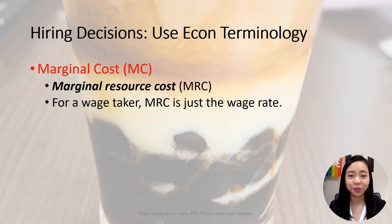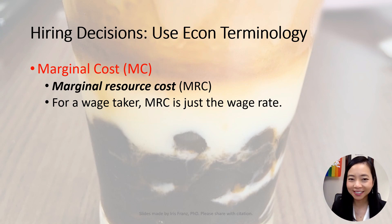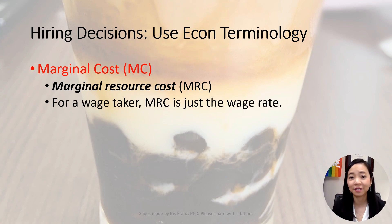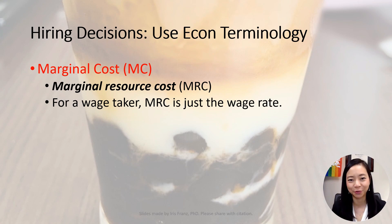The marginal cost of hiring one additional unit of resource such as labor and capital is called the marginal resource cost, MRC. In plain English, MRC is: how much additional money does it cost me if I hire one additional worker? For a wage taker, the marginal resource cost is just the current wage rate.